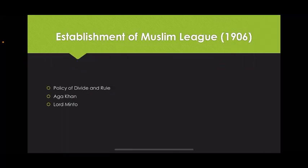The Muslim League was established in 1906. The British were disturbed by the growing unity among the people, as they had seen its power during the anti-partition movement. Therefore, the British once again followed the policy of divide and rule. They propagated that Muslims should have a separate political organization to safeguard their interests. A committee of upper-class Muslims under the leadership of Aga Khan met Governor General Lord Minto, and due to motivation from Lord Minto and other British officers, the Muslim League was established in 1906.